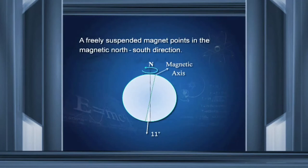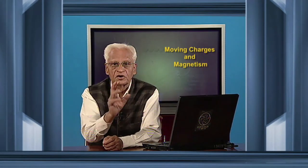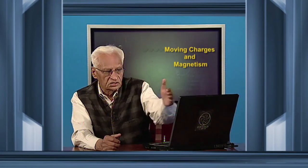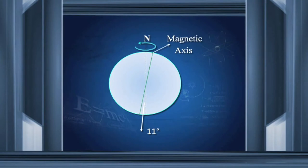Here I have shown both directions. The north-south geographic direction is the actual axis of rotation of the earth. The magnetic axis joins magnetic north and magnetic south, and this line is called the magnetic axis. It makes an angle of about 11 degrees with the geographic north-south direction. This angle changes with time, but at the moment its value is about 11 degrees.